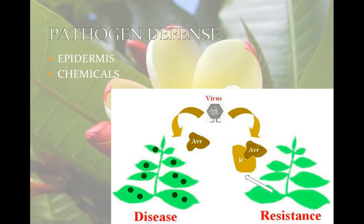The plant has R genes — that's for resistance. The microbe has AVR genes — that's avirulence, meaning it's a non-virulent form of the pathogen. The R gene codes for a receptor protein on the plant cell. The AVR gene codes for a signal molecule that binds to the receptor. When this binding occurs, a defense response stronger than normal occurs. The cells at the site of infection release many chemical defenses, the area is sealed off, and the cells die with the pathogens. This causes spots on the leaves. Hormones are also produced that signal other parts of the plant to produce additional defense chemicals. This is called systemic acquired resistance.